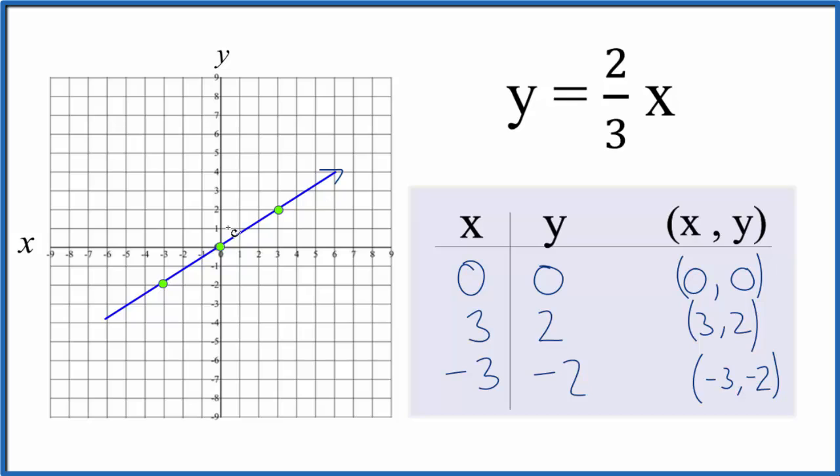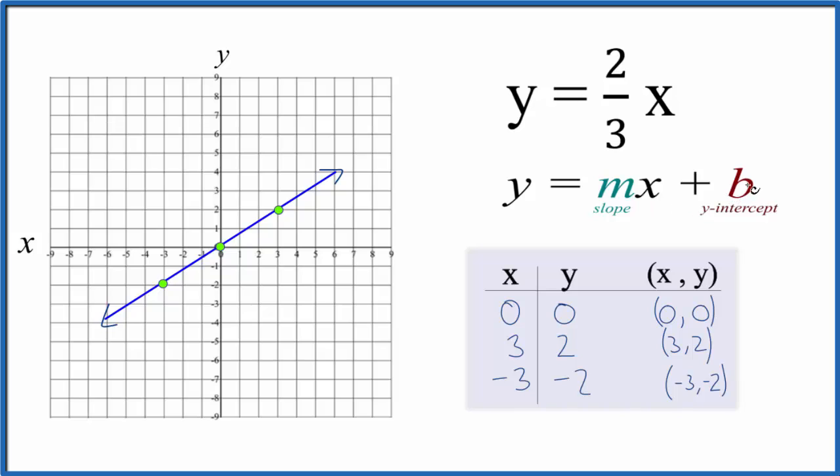And then we could put arrows to show that it goes to infinity. So this is the graph for the line of y equals 2/3 x. Let's check our work with slope intercept formula. So we have y equals mx plus b.